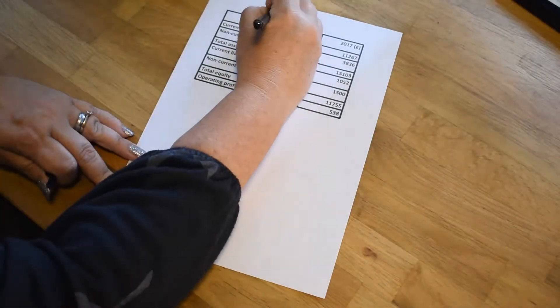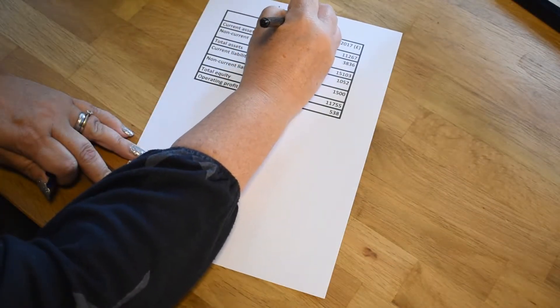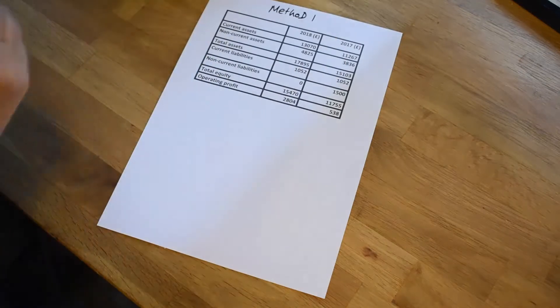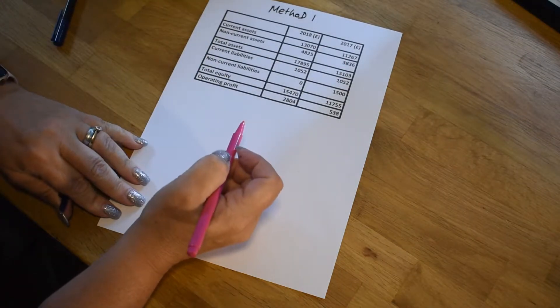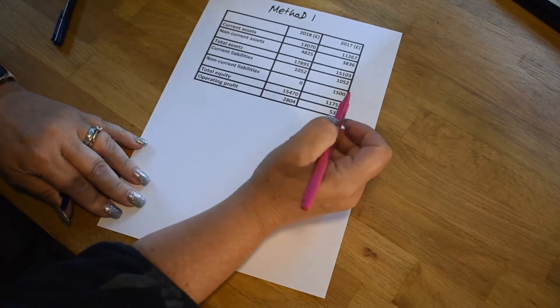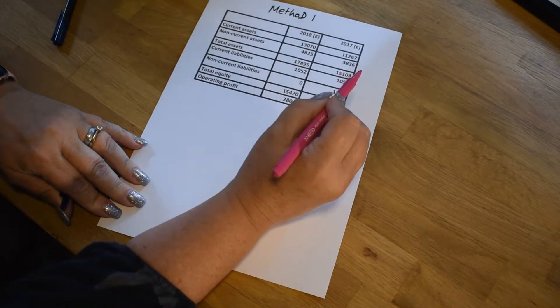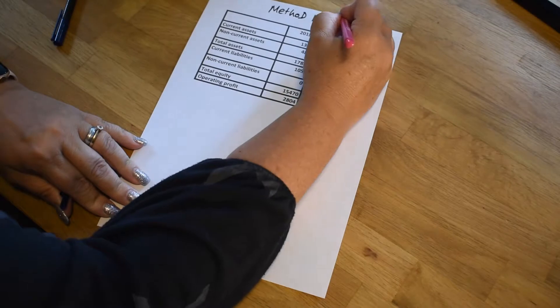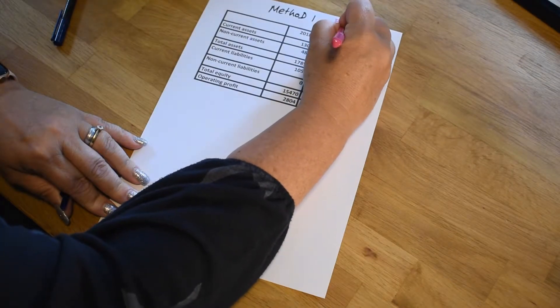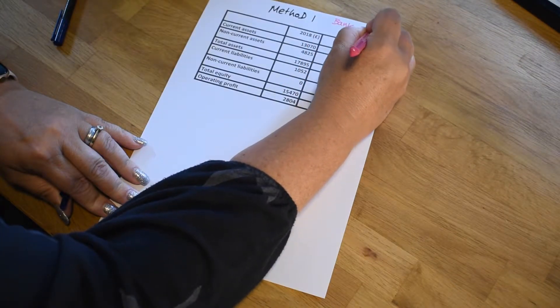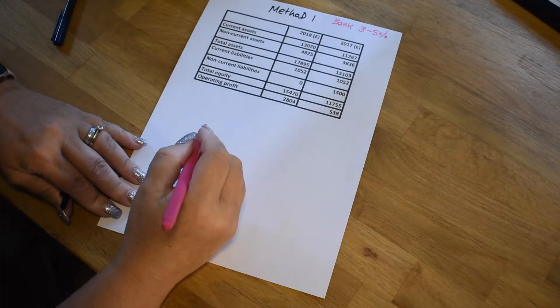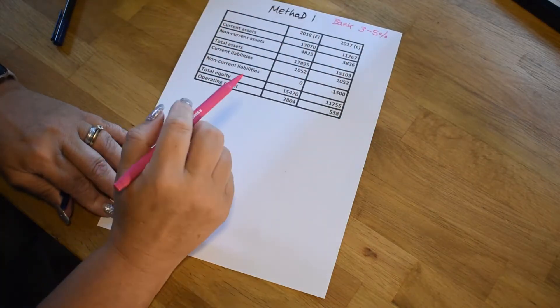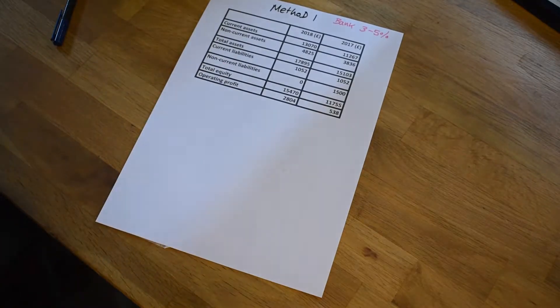So let's have a look at the two methods. Let's start with method one. Both of these methods are going to look at return on capital employed. It's looking at your investment. You've got some money to invest and you can either put it into a bank savings account where you might enjoy 3% to 5% on a very long term high interest account. So we're going to compare any result that we get against that bank account.